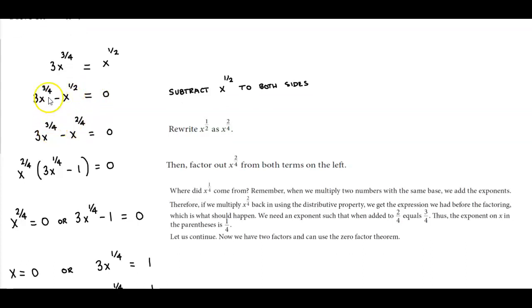What we want to do is make sure that these exponents have the same denominator. So we have 3x to the 3 fourths minus, well 1 half is the same thing as 2 fourths, so we have minus x to the 2 fourths which is equal to zero.